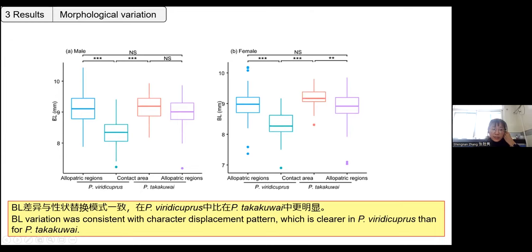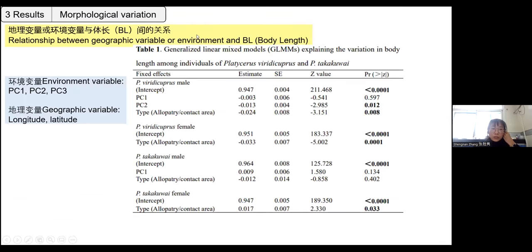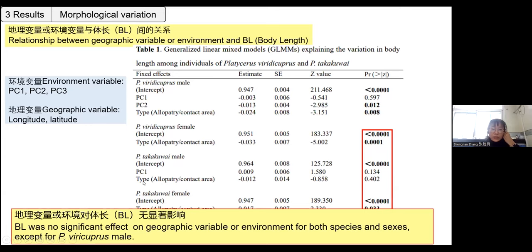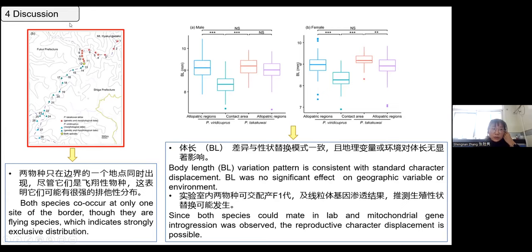We also compared the body length of both male and female samples. In allopatric regions, the body length of the two species is very similar. However, in the contact area, we found that the body length of P. variegatus cupreus is significantly shortened, whereas P. takakuwai shows a significant increase in body length. This difference is consistent with character displacement. We then modeled whether body length was affected by geographic or environmental variables, and found no significant effect for either species or sex.